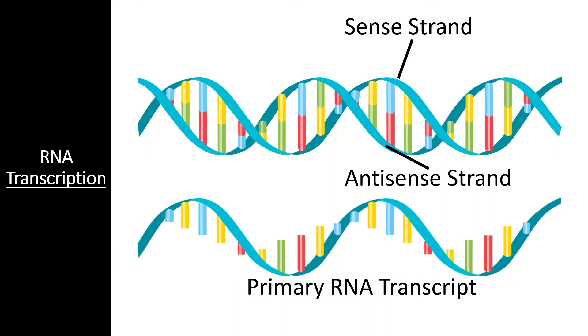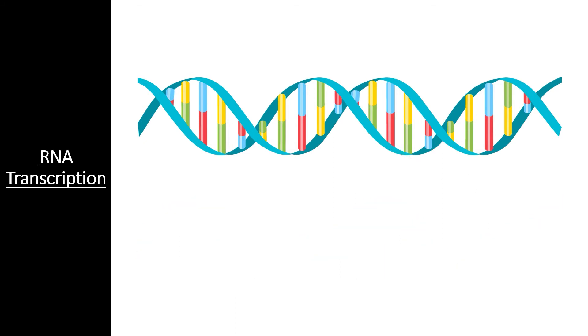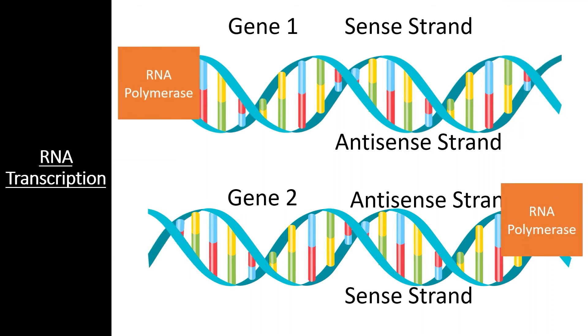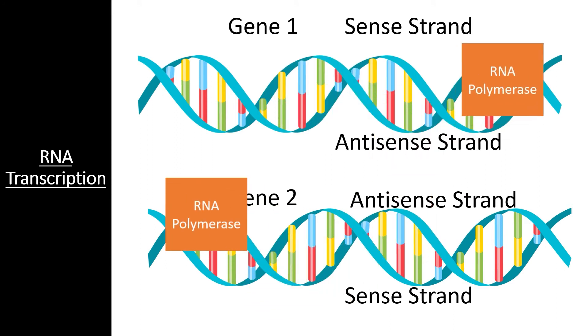One final thing to note is that the sense strand and the anti-sense strand designations rely entirely on the gene being transcribed. While the RNA transcript is always created in the 5' to 3' direction, different genes can use different strands of the DNA to serve as the template. RNA polymerase will simply recognize the promoter regions and move in the appropriate direction for each gene.